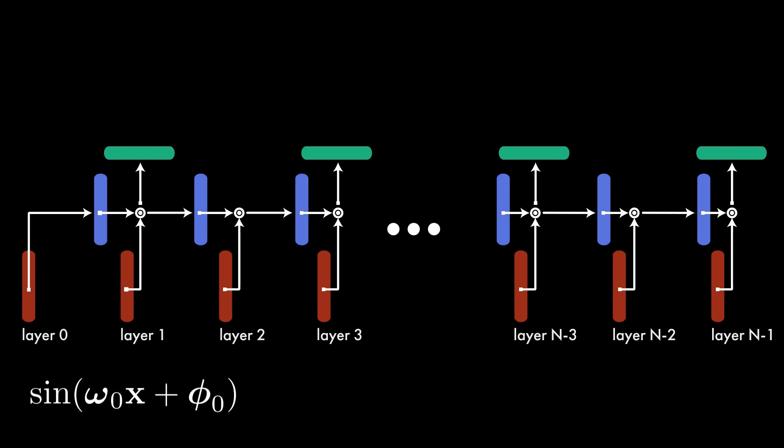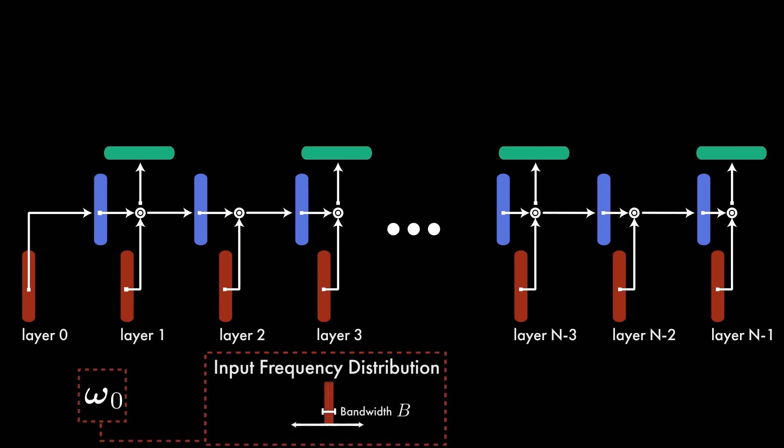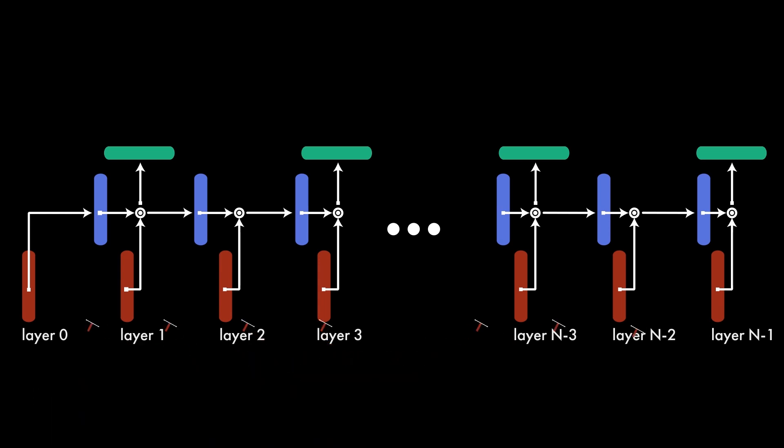To constrain the frequencies represented by the network, we randomly initialize the frequencies of each input layer to values falling within a specified bandwidth. The Hadamard product then results in a multiplication of sines, which produces new sines at the sum and difference of the frequencies.